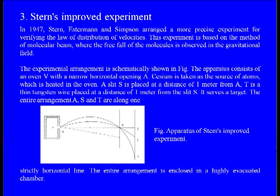The experimental arrangement is schematically shown in the figure. The apparatus consists of an oven, just like Zartman and Co, with a narrow horizontal opening A. Cesium is taken as the source of atoms, heated in the oven V. A slit S is placed at a distance of 1 meter from A. T is a thin tungsten wire placed at a distance of 1 meter from the slit S. The arrangement A, S, and T are all along a strictly horizontal line.